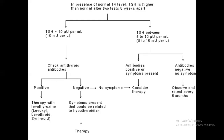The problem starts with marginal or subclinical hypothyroidism, where FT3 and FT4 are normal but TSH is elevated. If TSH is more than 10, check antibodies — if positive, start therapy; if negative but symptoms are present, start therapy. If TSH is between 5 and 10 with antibodies positive and symptoms present, start therapy. If antibodies are negative and TSH is between 5 and 10, observe and retest after six months.